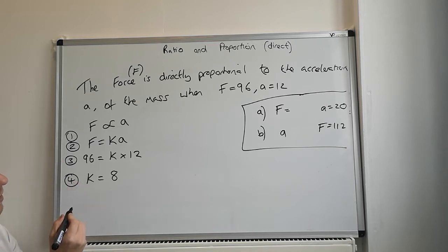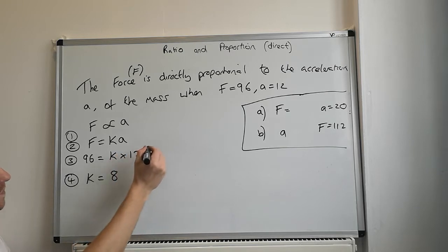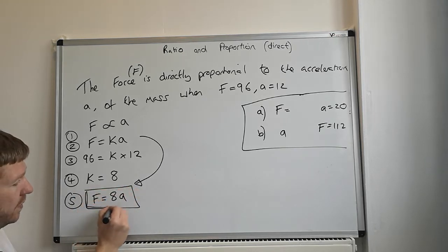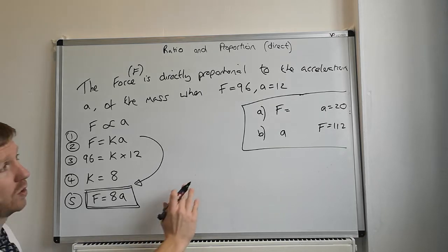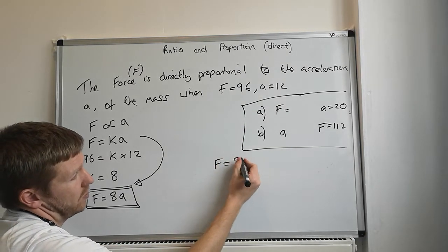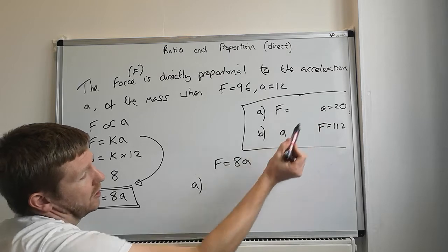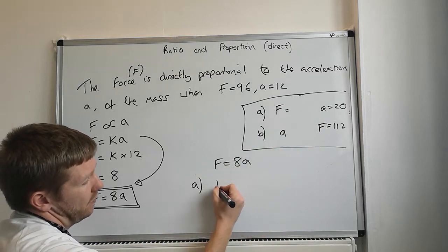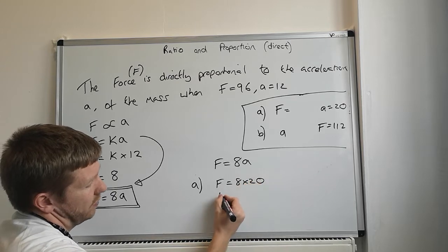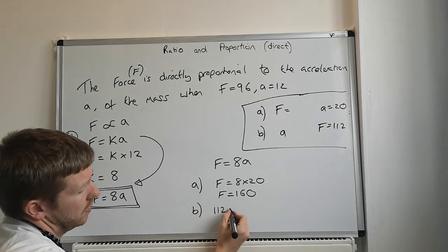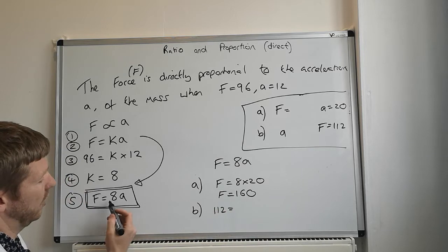Step four, and then step five will be to rewrite your step two with your k. So it's F is equal to 8a. So k is 8, that is the important thing. F is equal to 8a, you can then use that over here. So our question, using F equals 8a, part a was find F when a is 20. So F is equal to 8 times 20, F is equal to 160. Part b, F is equal to 112.